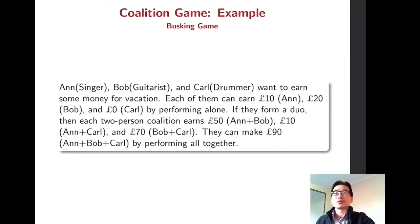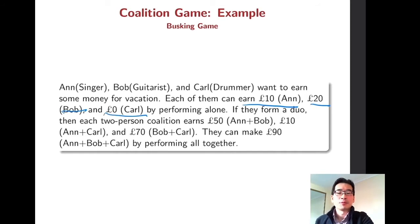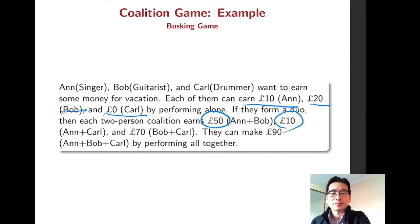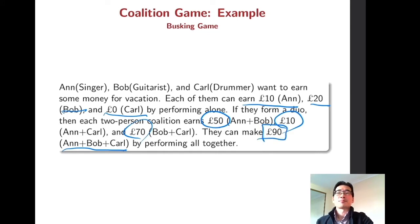This is our first example of a three-player game. I call this the busking game. We have three players: Ann, Bob, and Carl. Each of them can earn some money — Ann 10 pounds, Bob 20 pounds, or Carl 0 pounds by performing alone. If they form a duo, Ann and Bob can get 50 pounds, Ann and Carl 10 pounds, and Bob and Carl 70 pounds. The three-person coalition of Ann, Bob, and Carl, by performing all together, can make 90 pounds. Such a situation can be described as a coalition game.